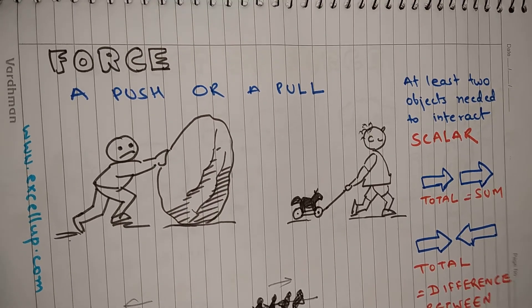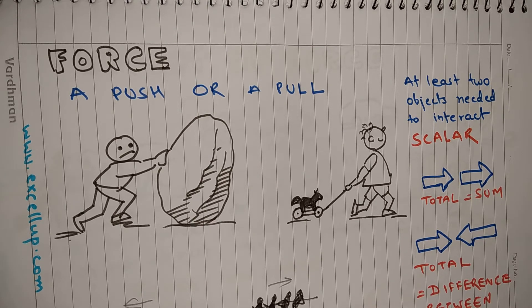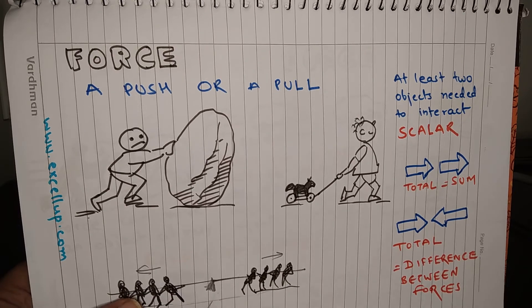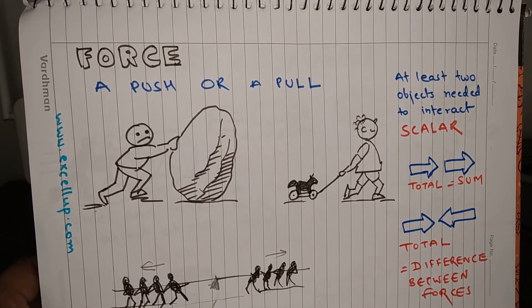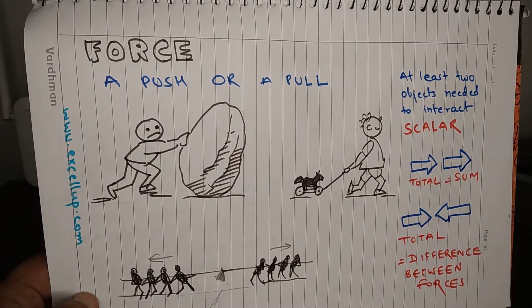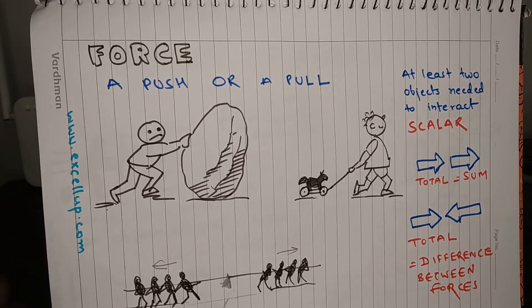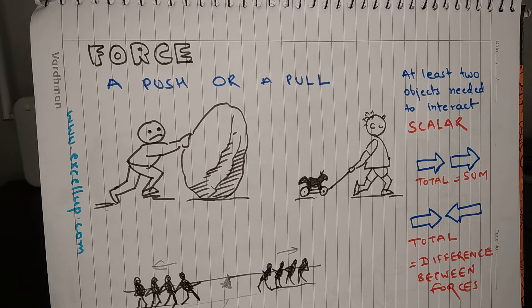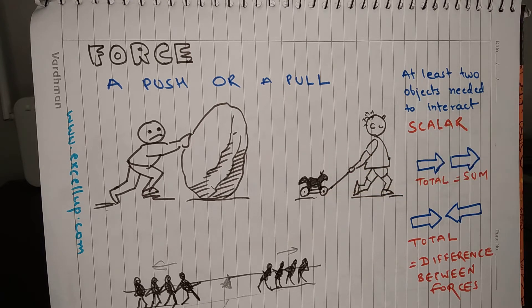What is force? A push or a pull is called force. So when you are pushing something, you are applying force on that object. Similarly, when you are pulling something, you are applying force on that object. This guy is trying to push a rock, so he is applying force on the rock. This little boy is pulling a toy cart, so he is applying force on the toy cart.